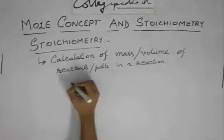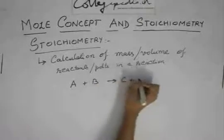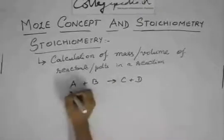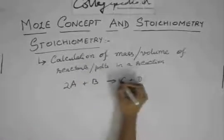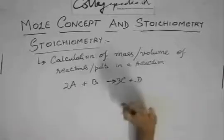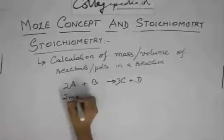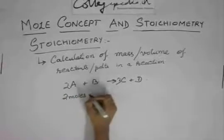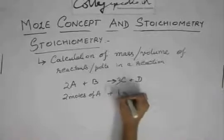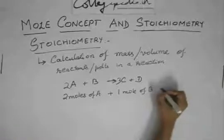Now what we have learned from the basic law is that suppose A plus B gives C plus D. Suppose it is 2A plus B gives suppose 3C plus D. So what does this reaction actually mean? It means that 2 moles of A react with 1 mole of B to give